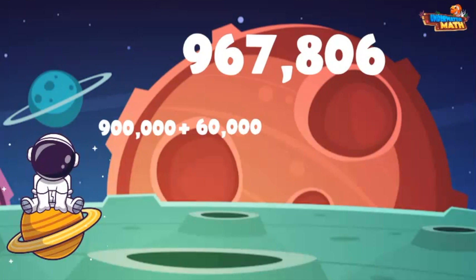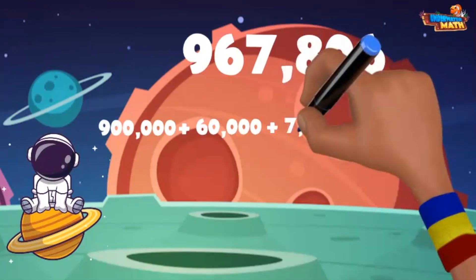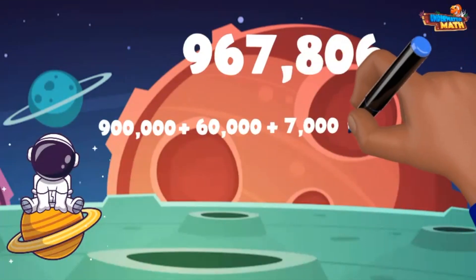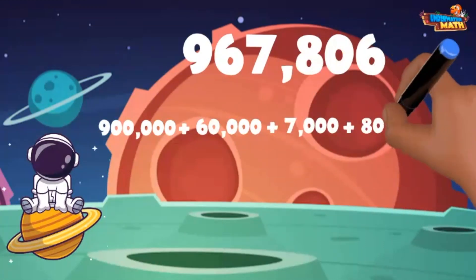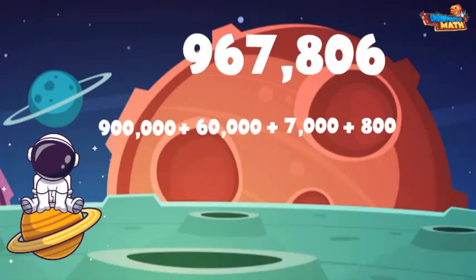The 7 represents 7,000. Next we have an 8 in the hundreds place to represent 800. There is a 0 in the tens place, so we can skip over that. Last, we have a 6 in the ones place, which is just the number 6. So 967,806 in expanded form is 900,000 + 60,000 + 7,000 + 800 + 6.